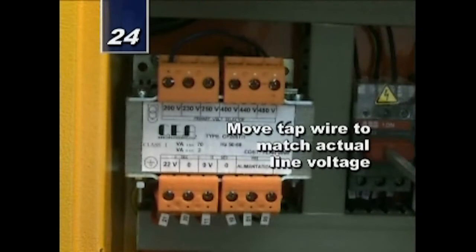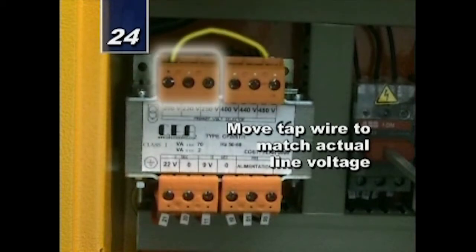Step 24. Using cabinet key provided, open hydraulic electrical cabinet door. Verify power tap setting on transformer matches actual incoming line voltage. Move tap wire as necessary to match actual voltage. Close and lock access door.